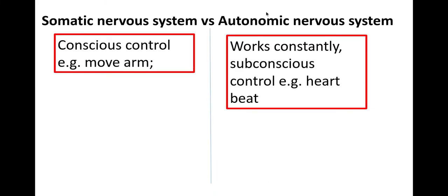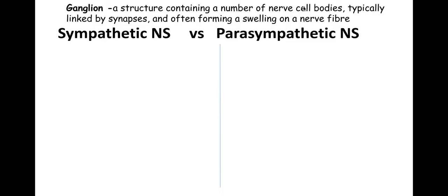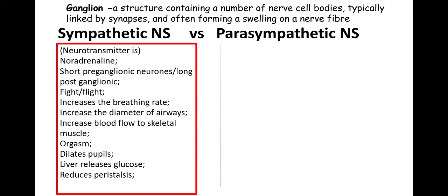The autonomic nervous system is then split into your sympathetic and your parasympathetic nervous system. A new term to be aware of is a ganglion, which is a structure containing a number of nerve bodies, typically linked in synapses and often forming swellings in a nerve fibre. The sympathetic nervous system is your fight and flight response, where the neurotransmitter is noradrenaline, and it has short preganglionic and long postganglionic neurons.